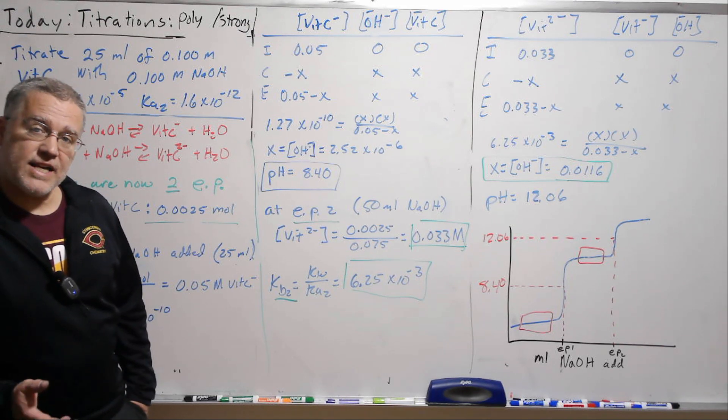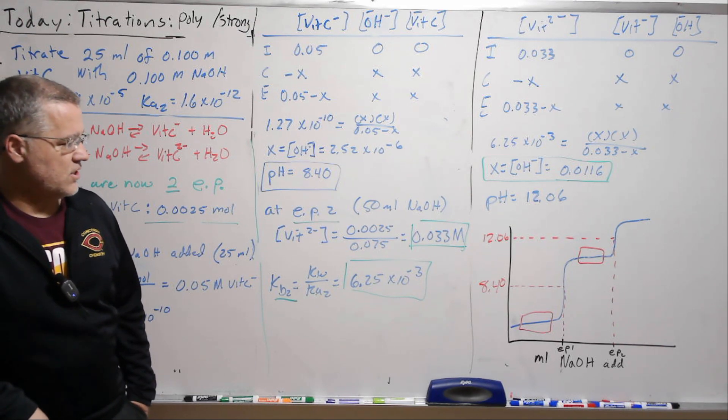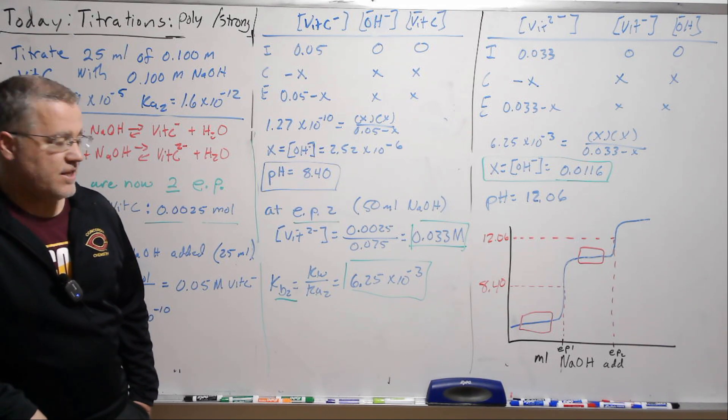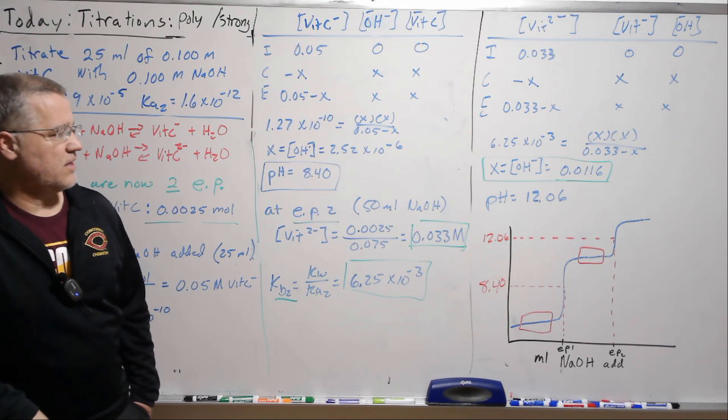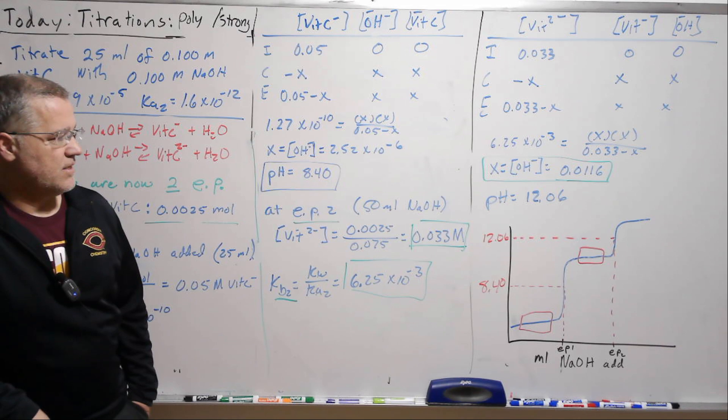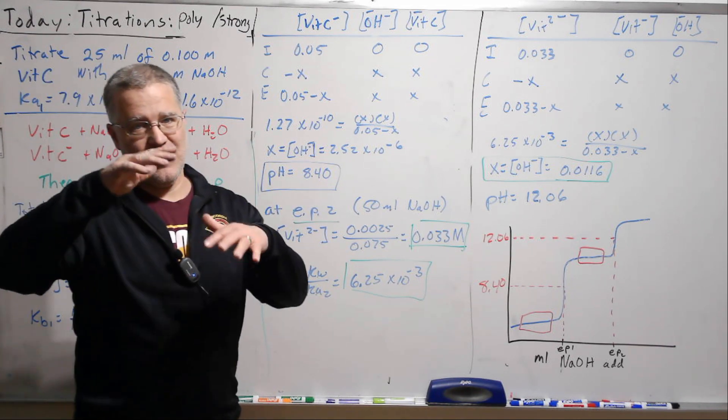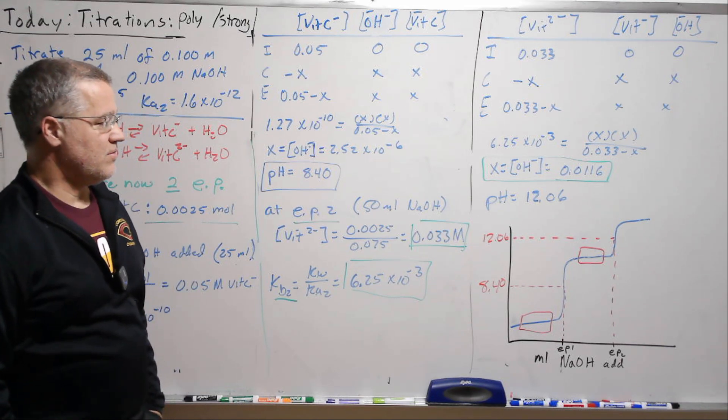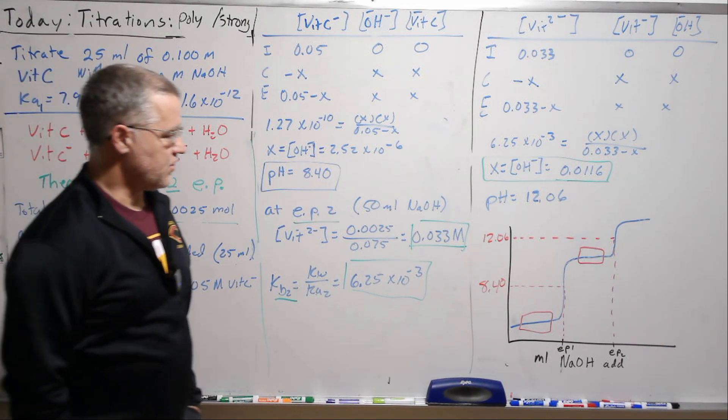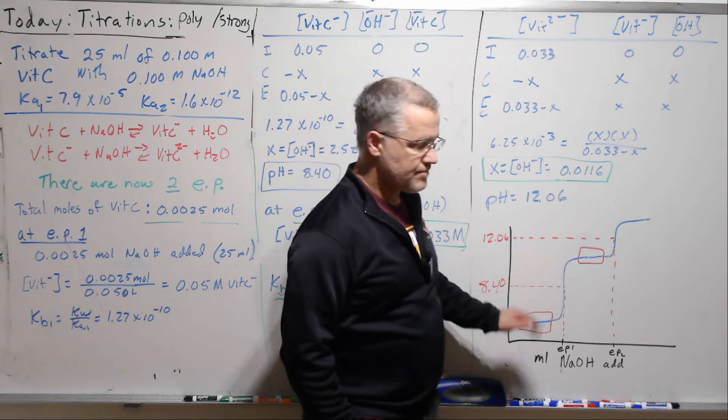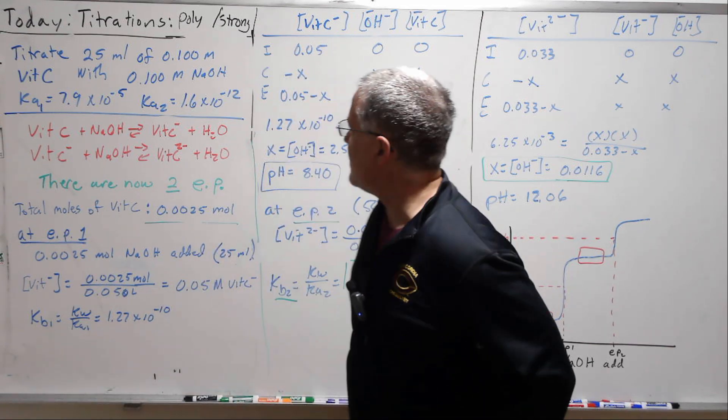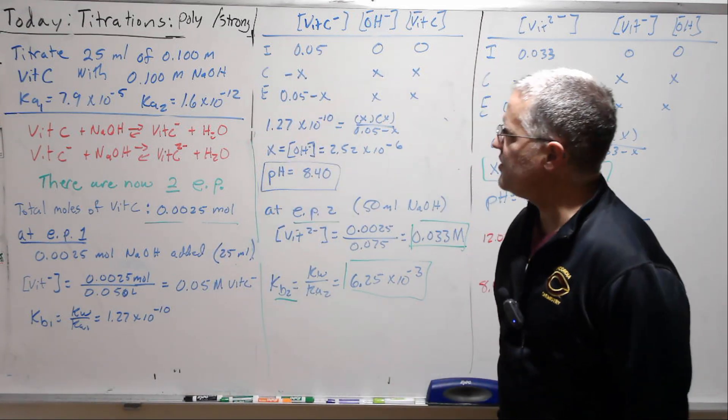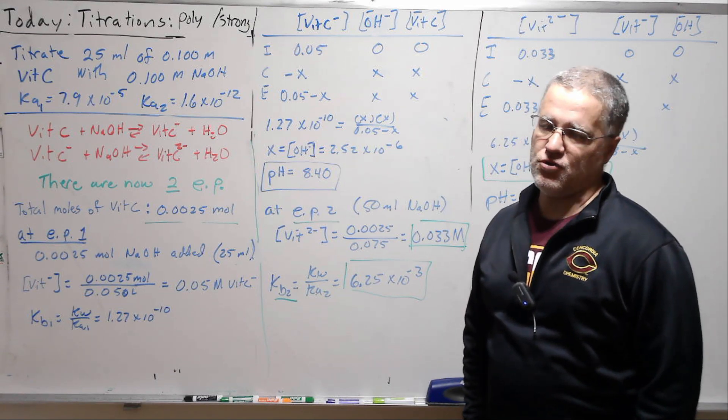If we had phosphoric acid, a tri-protic acid, we would see three breaks in our titration curve. And they can get pretty close on top of each other when you have tri-protic acid. So sometimes it's even kind of hard to see the breaks. They're not as crystal clear as a monoprotic acid. All right, so that is titrations of a poly-protic acid.